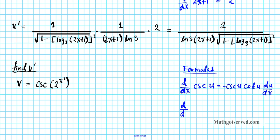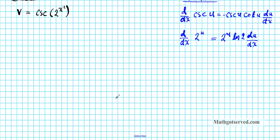For the exponential function: d/dx of 2 raised to the u equals 2 raised to the u times the natural logarithm of the base 2, times du/dx by the chain rule. For the innermost function, d/dx of x squared: no chain rule is needed since it's not composite, giving simply 2x.